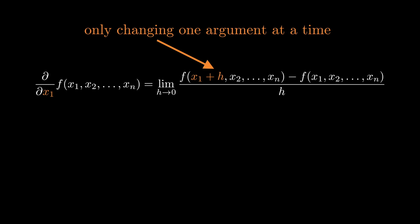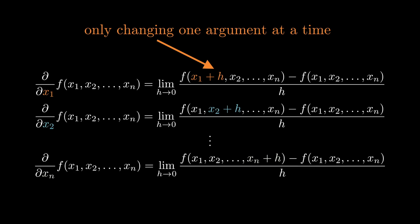For partial derivatives, we use this funny kind of curly d. Here I'm writing the partial derivative of the function f with respect to x_1. I've colored the important bits in orange. Since the function takes multiple arguments, this is a thing we can do for each of the n arguments to f. We get n different partial derivatives when we do that.